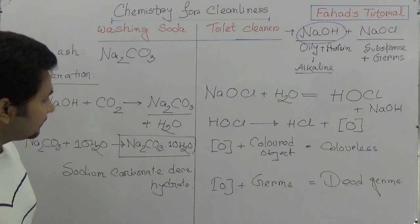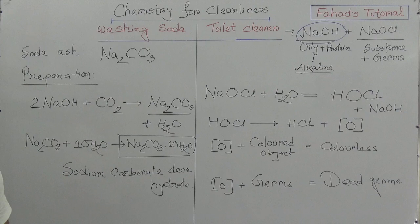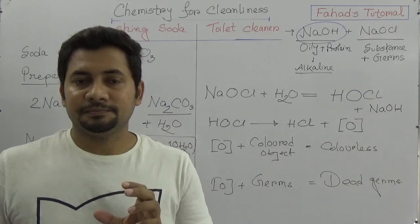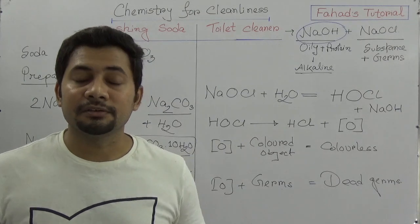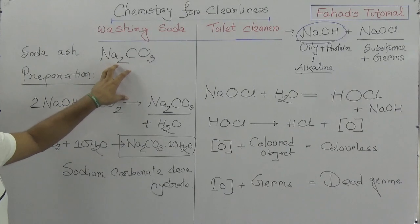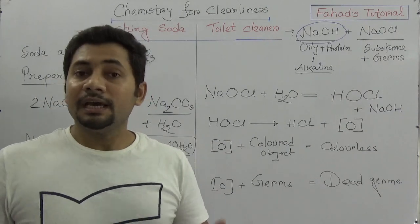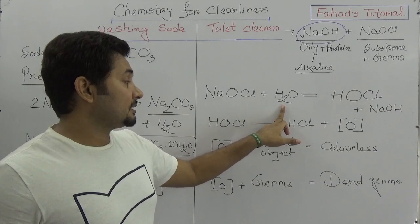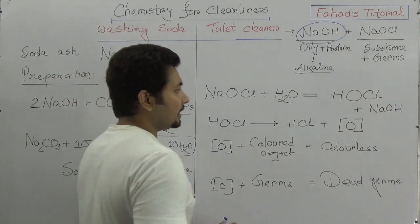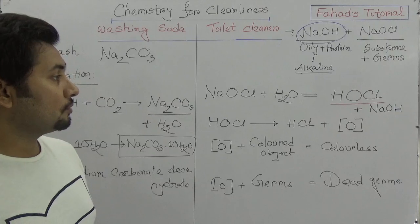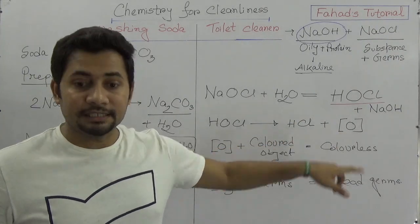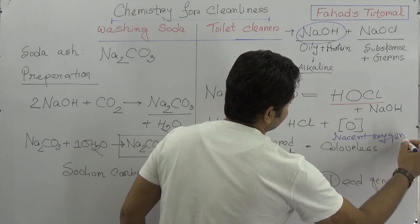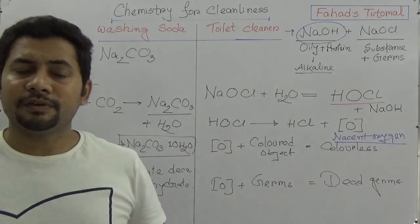Whenever you study this chapter, remember the key reactions — they are very common in exam questions. For MCQs regarding washing soda, these reactions should be memorized. The key reaction is: sodium hypochlorite reacts with water to produce hypochlorous acid HOCl, which then breaks down to produce nascent oxygen [O]. This nascent oxygen works on both colored objects — making them colorless — and on germs, killing them.